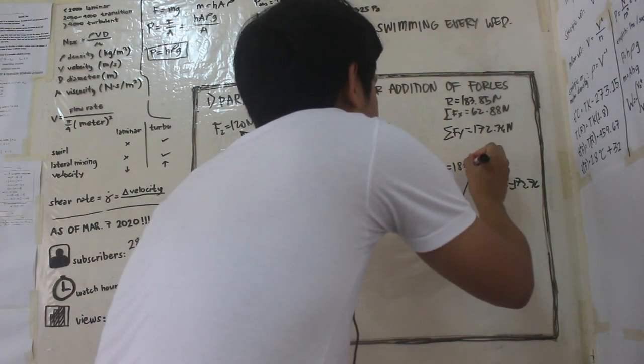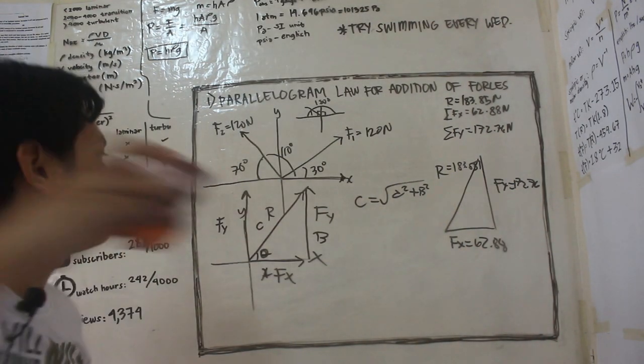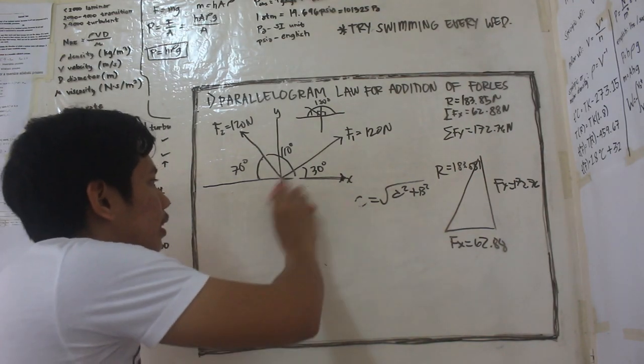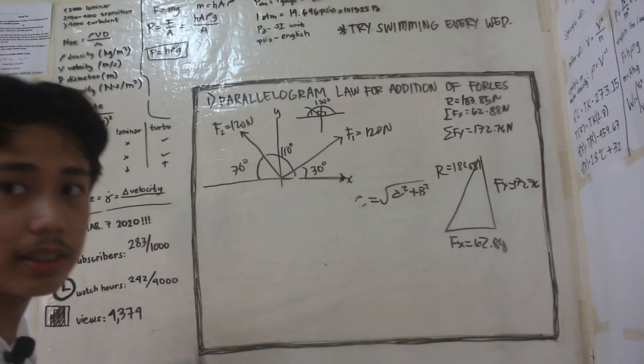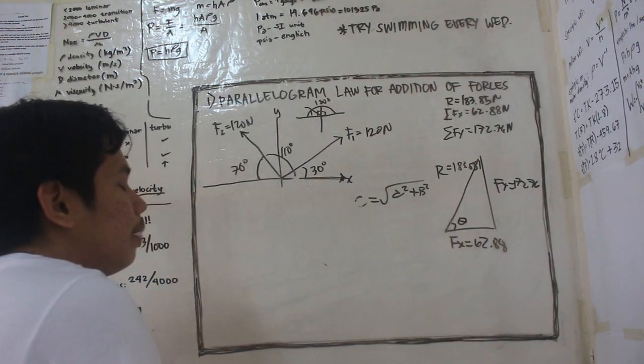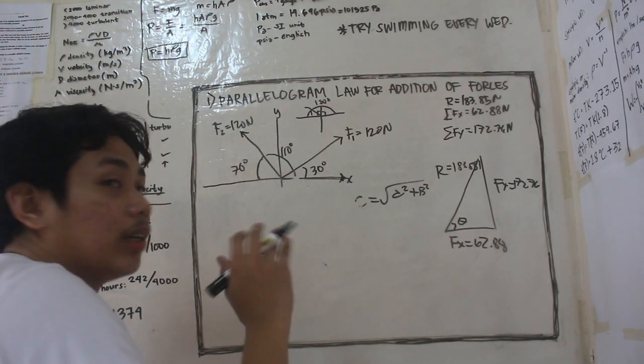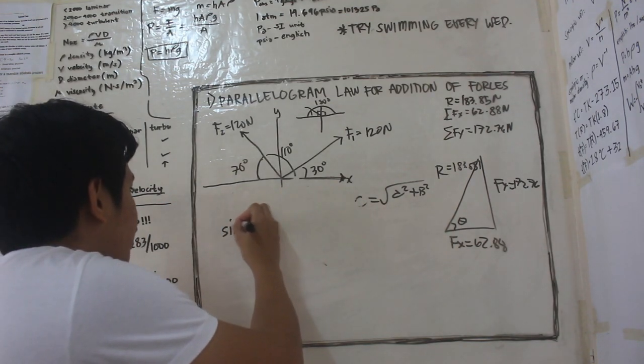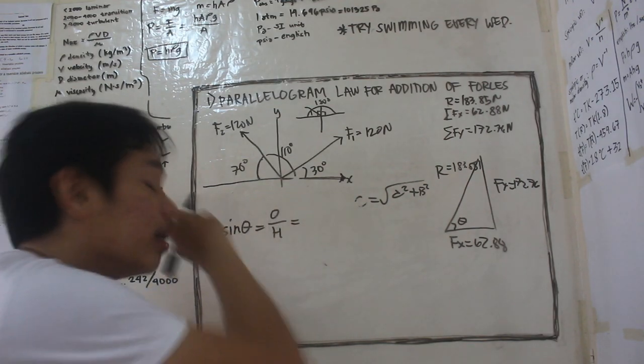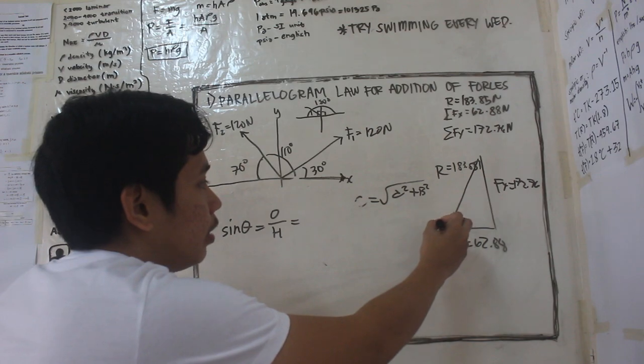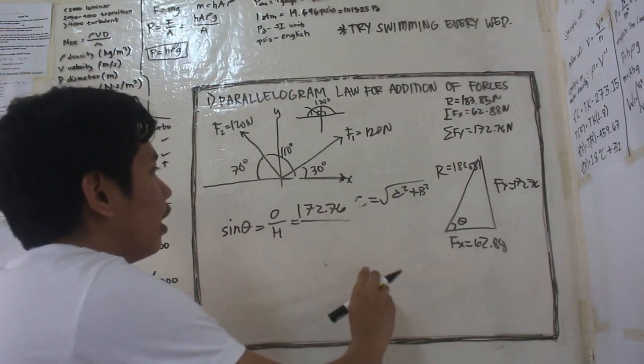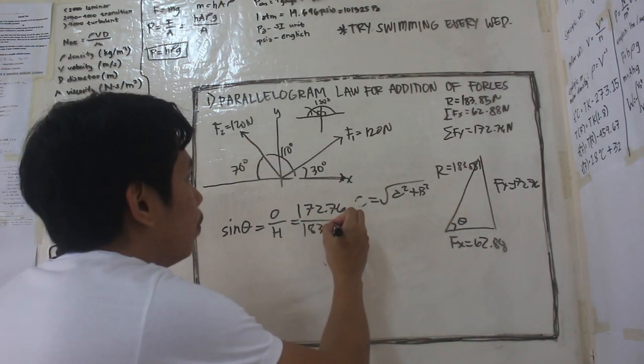So meron na tayong f of x is equal to 62.88 newtons, f of y is equal to 172.76, tsaka yung r natin is equal to 183.85. Yan. So ang gagawin natin, gagamit tayo ng yung sinulat ko kanina na law of sines and law of cosines. So paano nga ba to kukunin yung theta dito? So di ba, alam naman natin na sa law of sines, sine theta is equal to opposite over hypotenuse. So ang opposite neto, dito, eto diba? So it's 172.76 over ang hypotenuse nyo na 183.85.